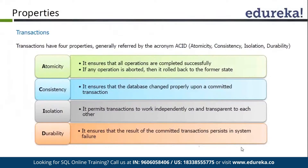Then it is Consistency. It simply means either the transaction is processed completely or it is not processed at all, so the database remains consistent. If we are going to update the data of three tables in a transaction and I have updated data for the first table but got an error while updating the second table, even the data for the first table will be rolled back. The data will remain consistent — there is no chance that data will be inconsistent.